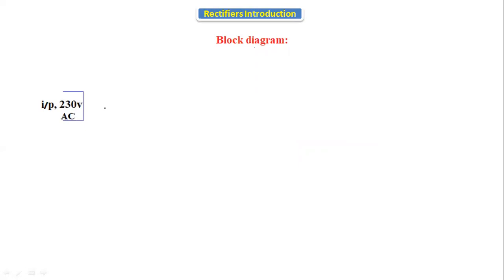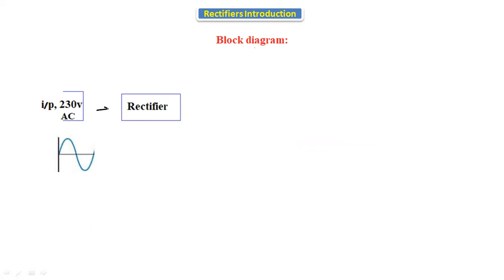Now let's see the block diagram of the rectifier. We give 230 volts AC as input to the rectifier circuit. The rectifier converts the AC to pulsating DC. This output is called pulsating DC — it is not pure DC.